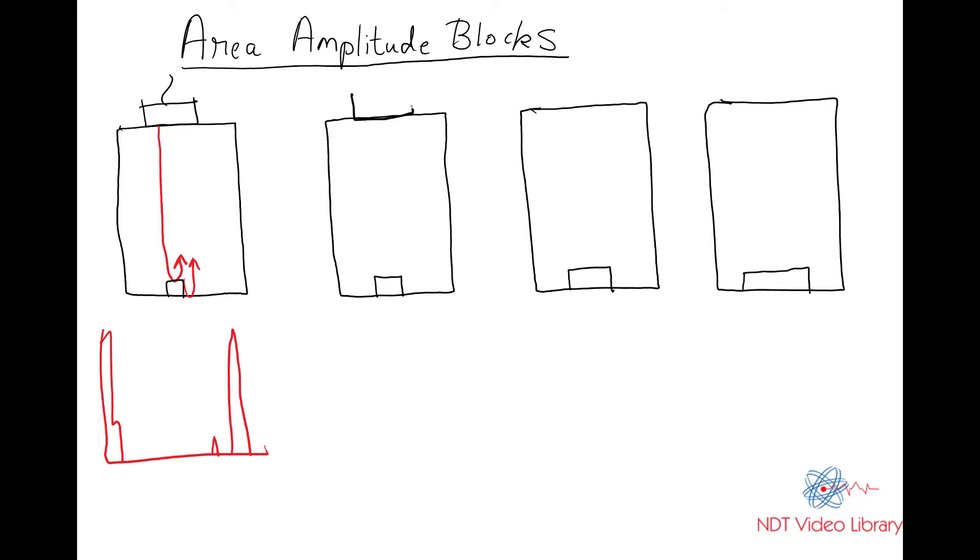Now move the transducer to the second block. How would it change? Think about it. The sound goes to the flat bottom hole. This time it's bigger, so the amplitude would be taller. And the back wall would be shorter because more sound gets reflected from the flat bottom hole, so less sound goes to the back surface.